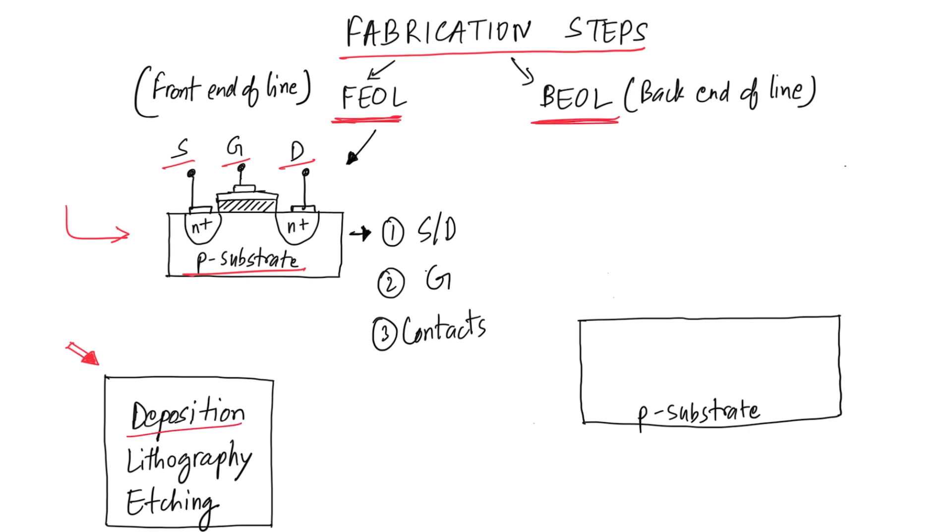The first is deposition, which involves depositing a layer of metal or dielectric on the surface of the wafer. The second is lithography, in which we use a light-sensitive material called photoresist and UV or extreme UV light to transfer a pattern on the wafer surface. And the third one is etching, which is basically used to remove any material from the surface of the wafer. So, in this video, to keep things simple, let's try to understand how the fabrication step will look like for a device like this transistor.